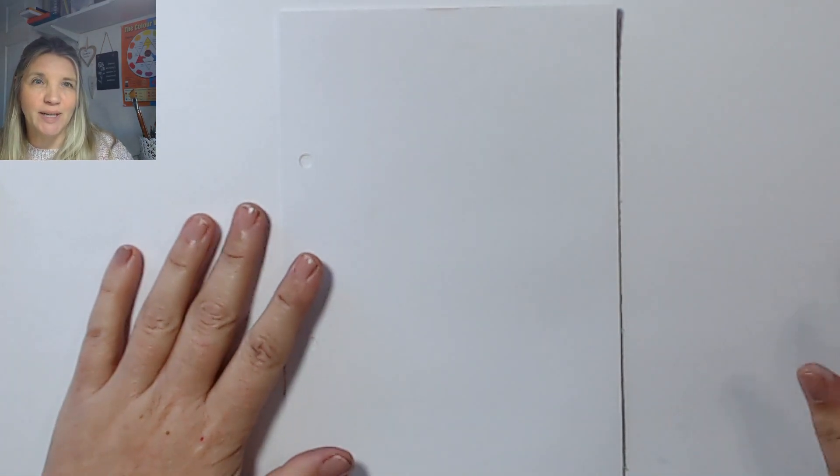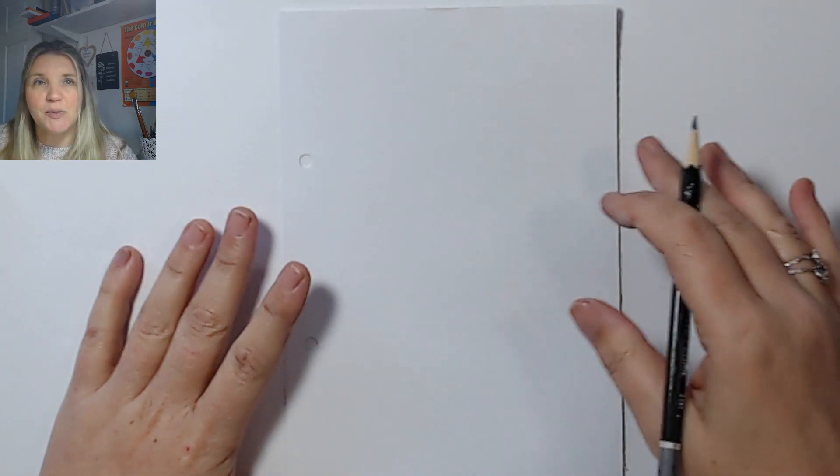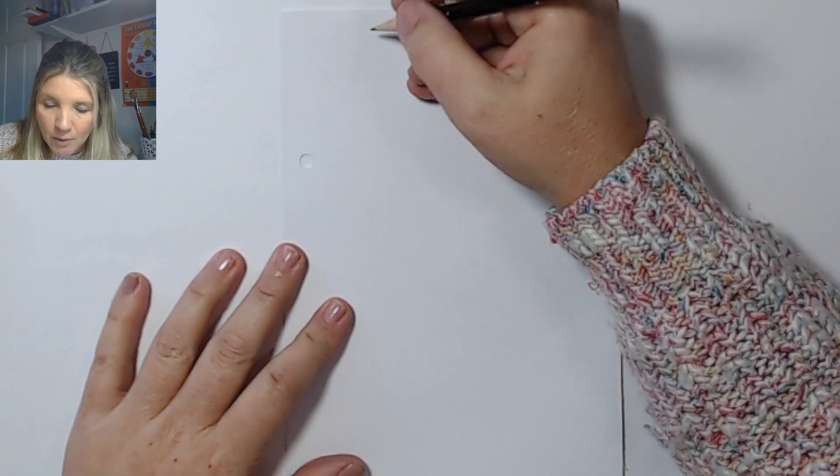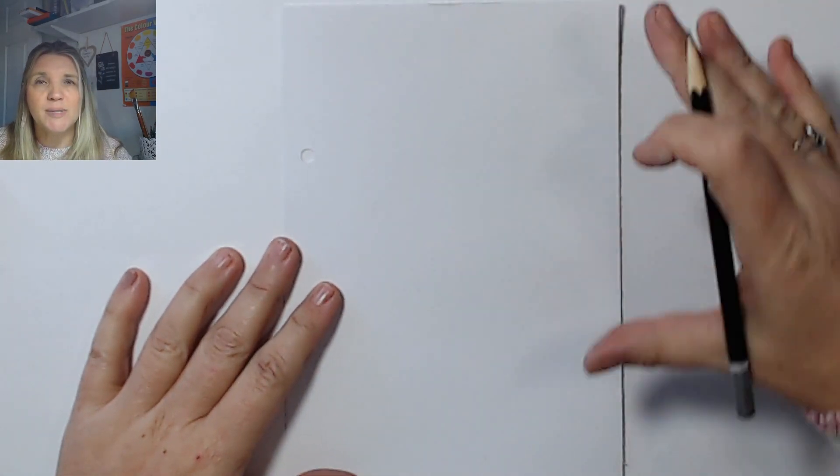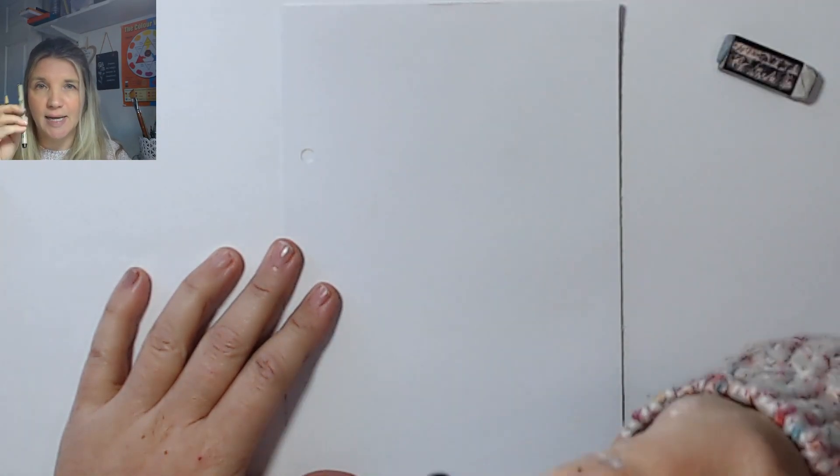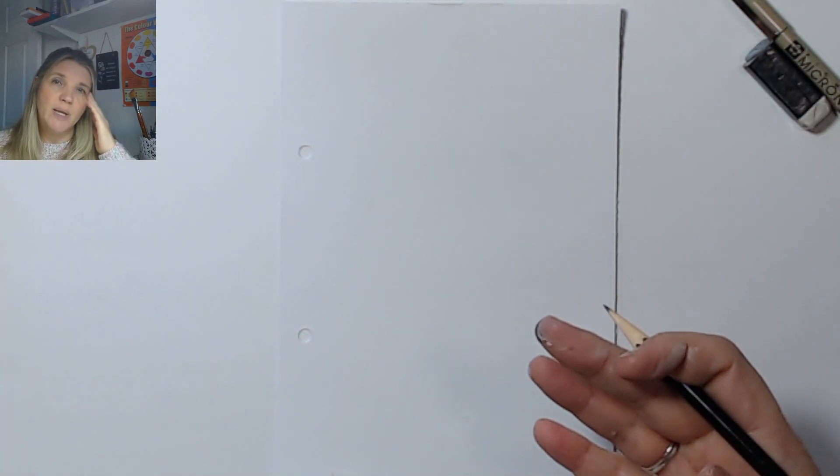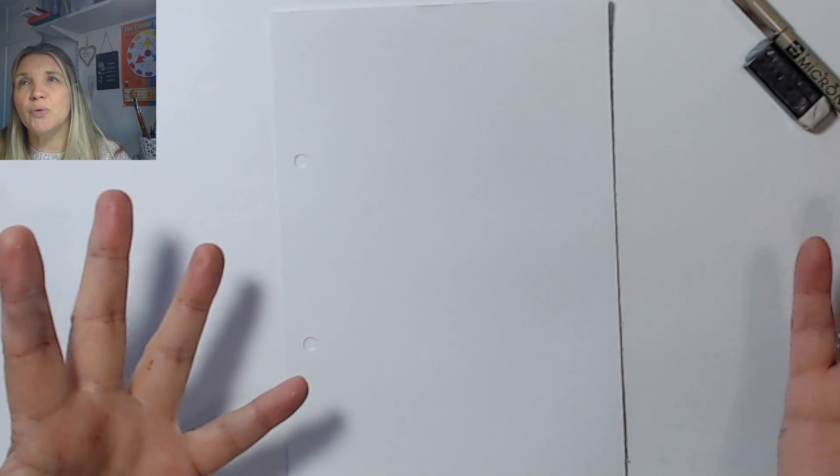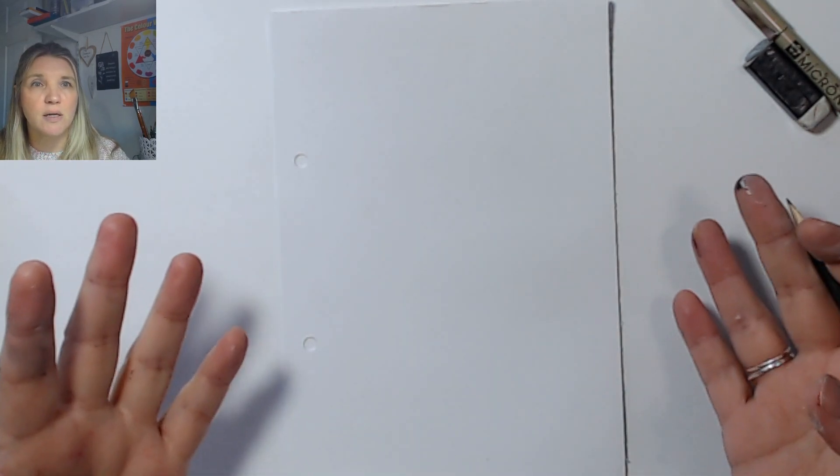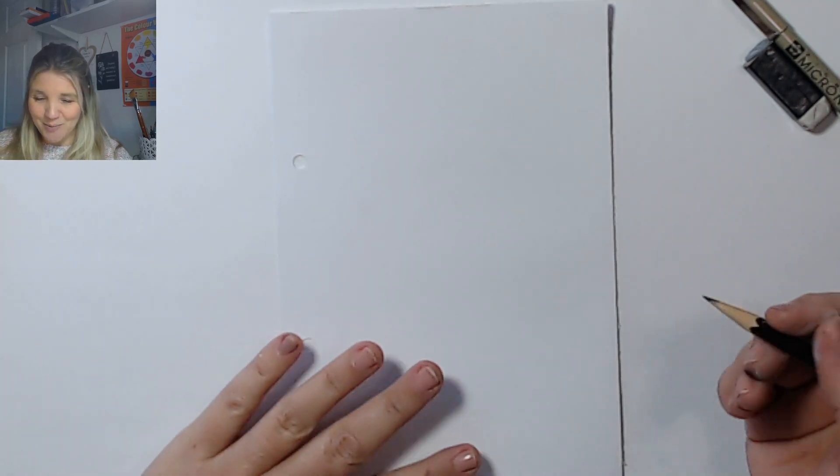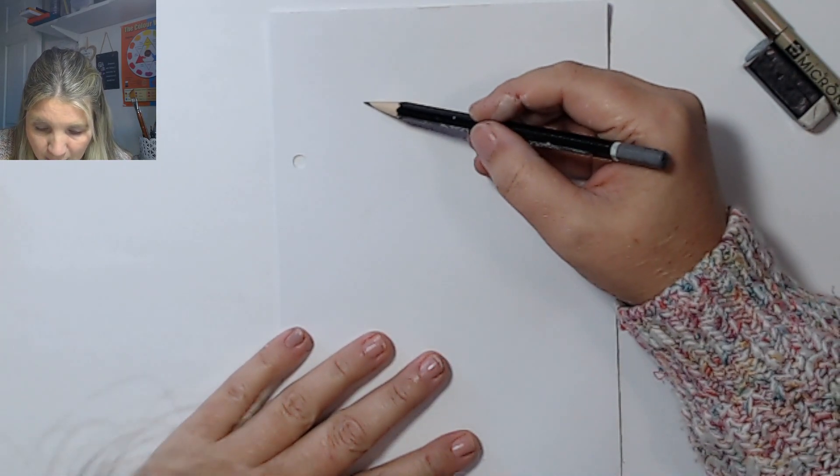So I'm going to start really simply. I have some ideas up on the screen so if I'm looking up that's why. I would say have a pencil and rubber handy and have a black liner pen of some sort, and of course you can colour them in afterwards as well. You could also make them into card designs, but to start with let's just do some simple doodling.